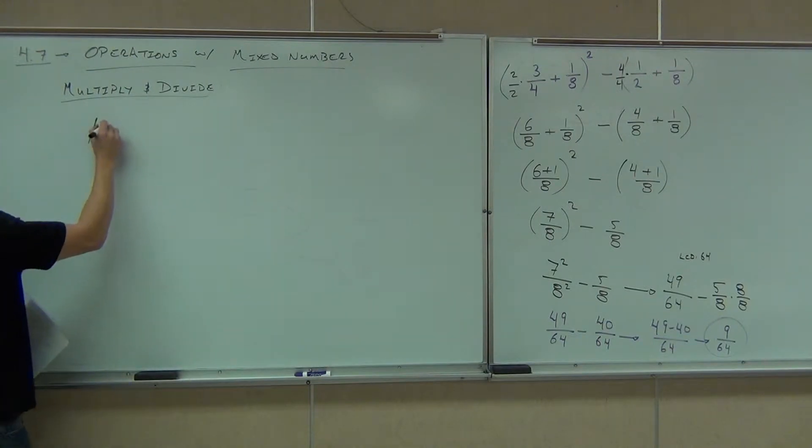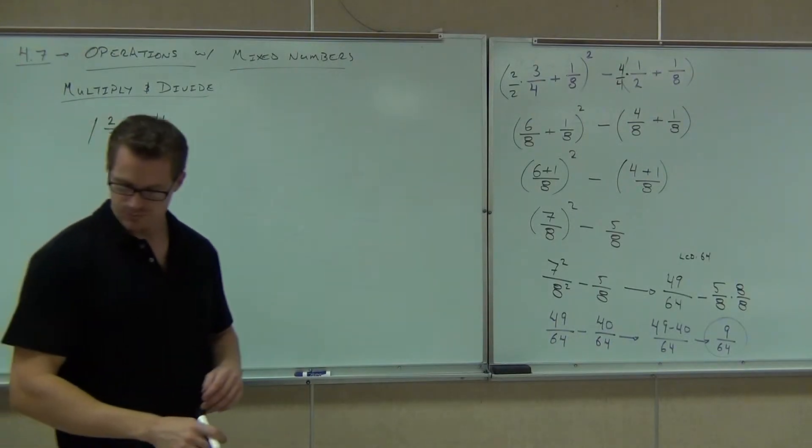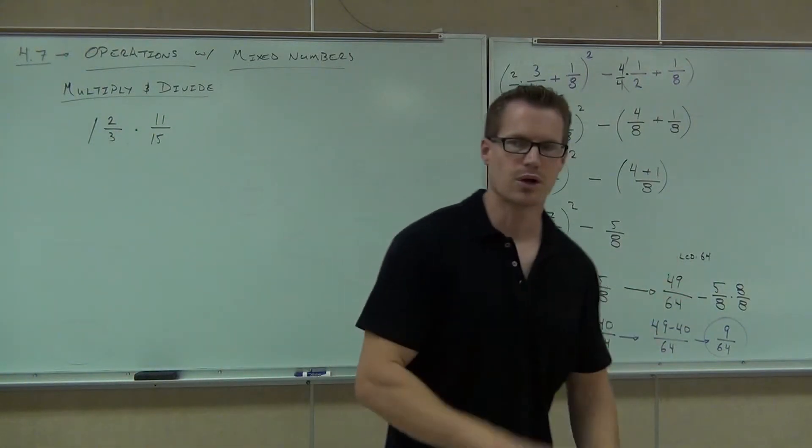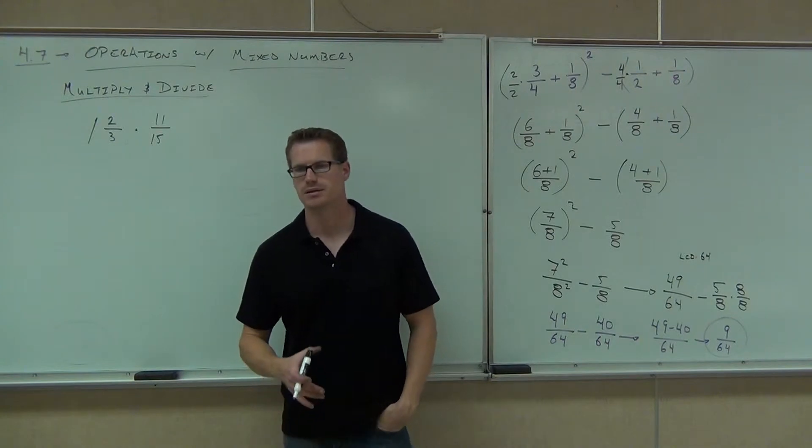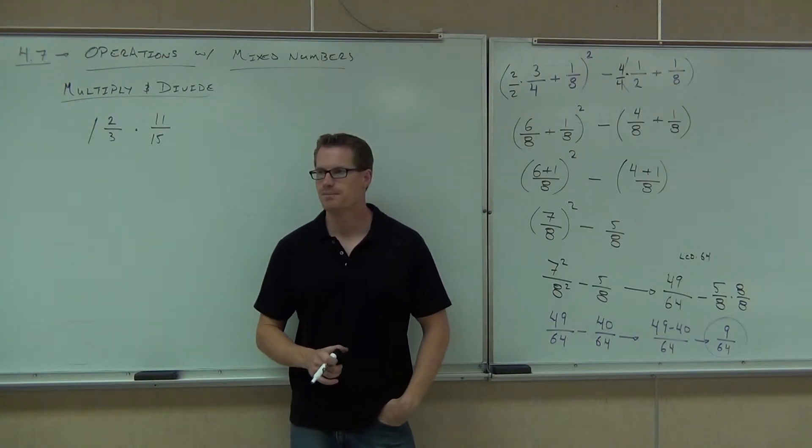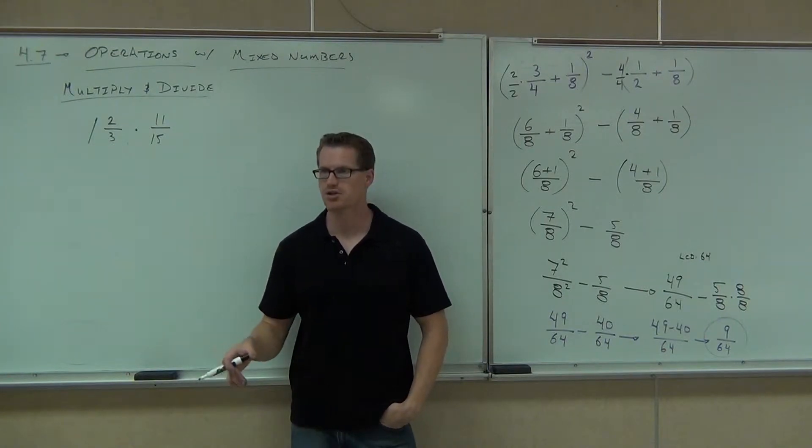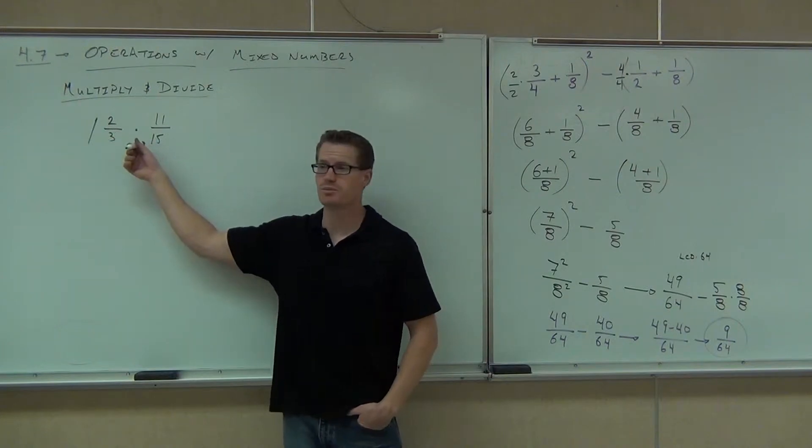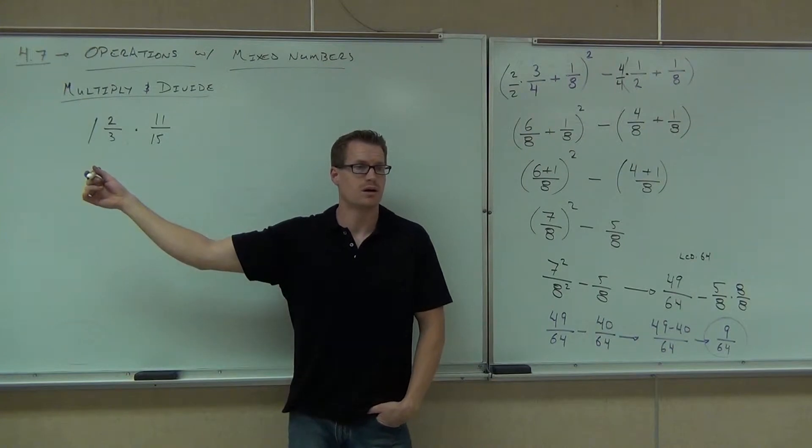So how does it even look? Well, if I have a couple of mixed numbers, like let's say 1 and 2/3 times, let's keep that one a regular fraction, 11/15. How in the world are we going to multiply 1 and 2/3 times 11/15? My goodness. Well, I'll tell you what. There's actually no way to multiply a mixed number times a fraction. There's no way to do it. You can't just take these two numbers and multiply them. It doesn't work.